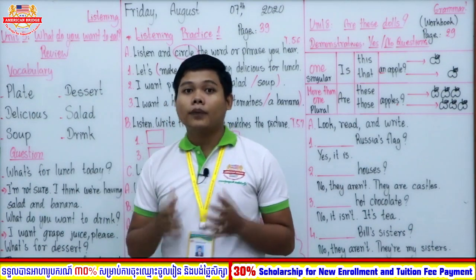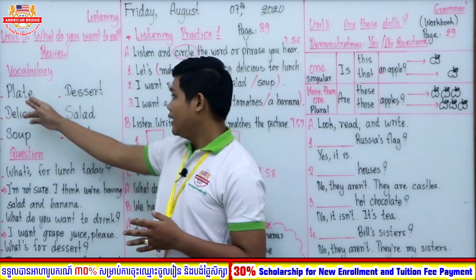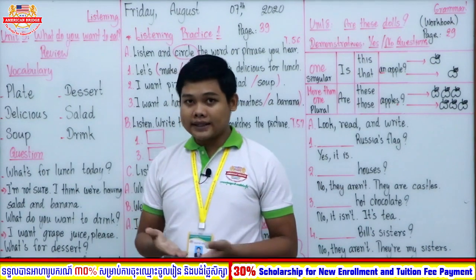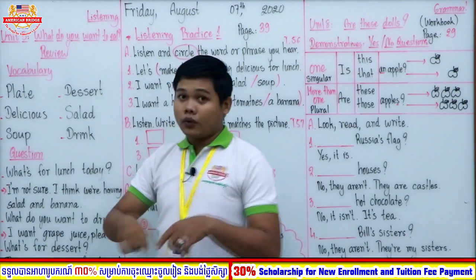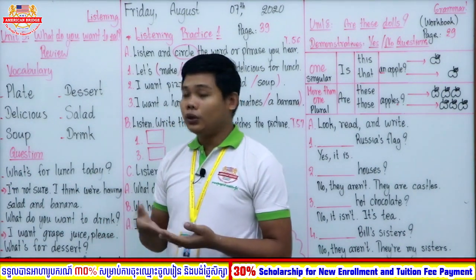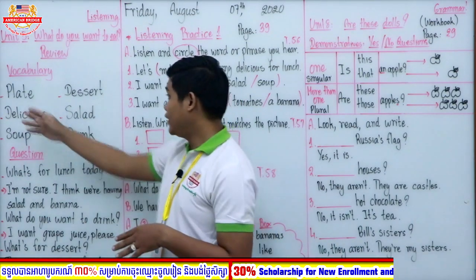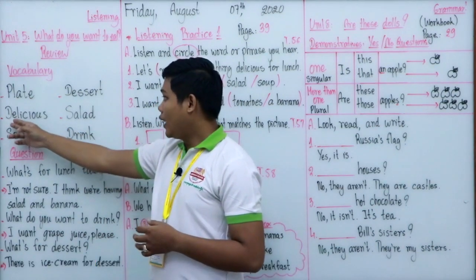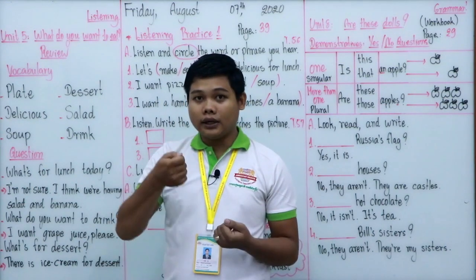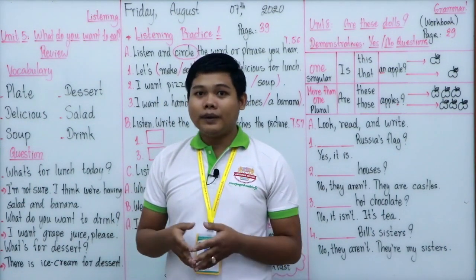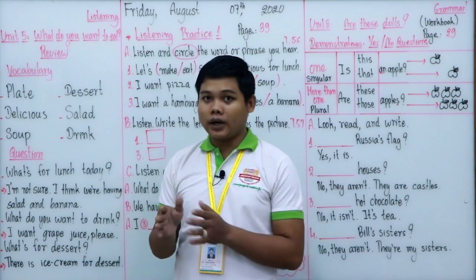We have six vocabulary words in our new unit related to 'What do you want to eat?' The first one is 'plate.' A plate is a round, flat object we use to put food on. The next word is 'delicious.' For example, when you eat pizza and say 'wow, the pizza is so delicious' — it means it tastes very, very good, very tasty.